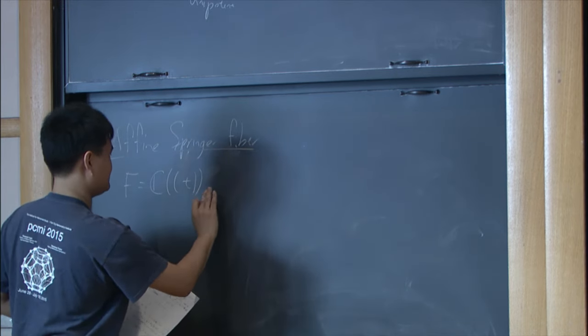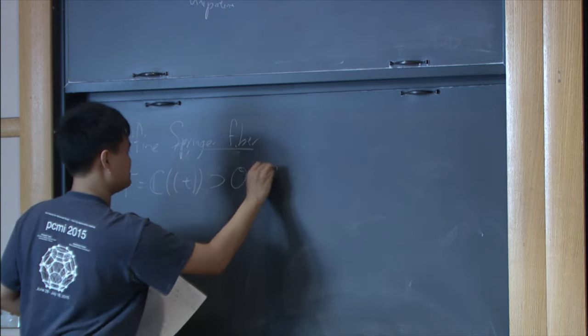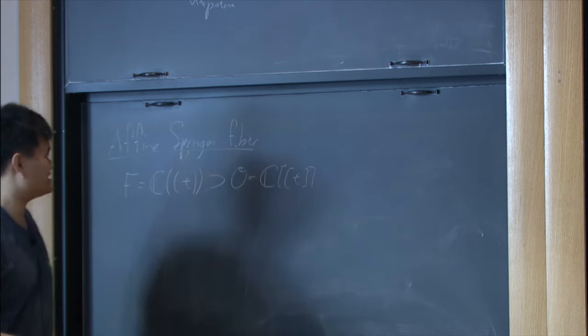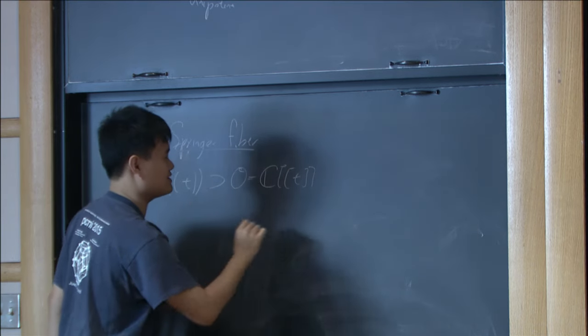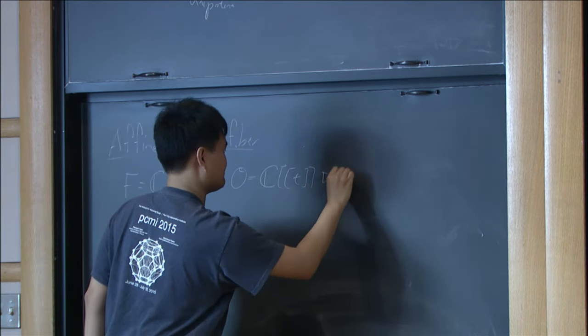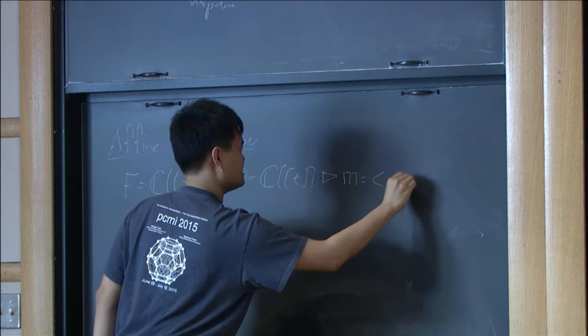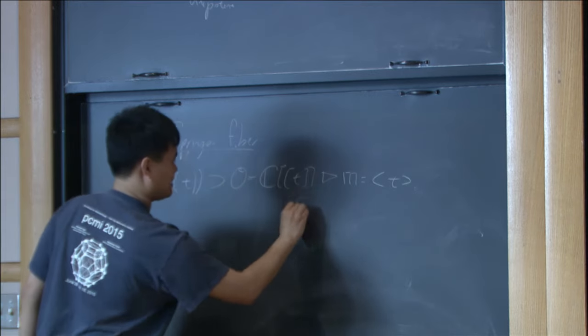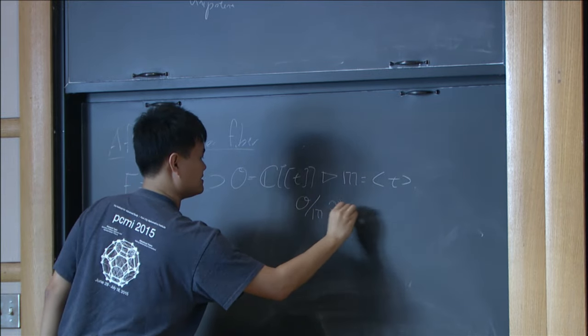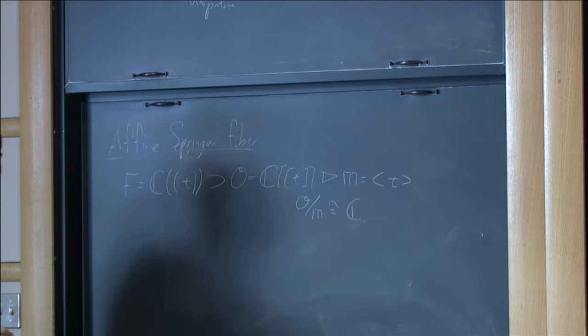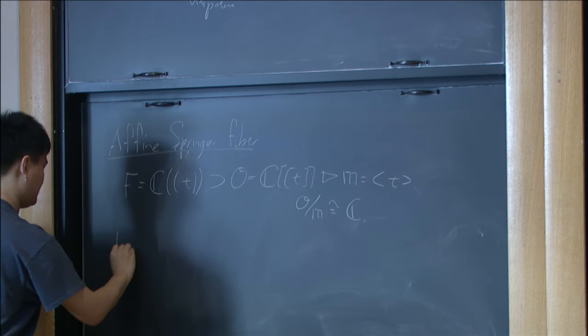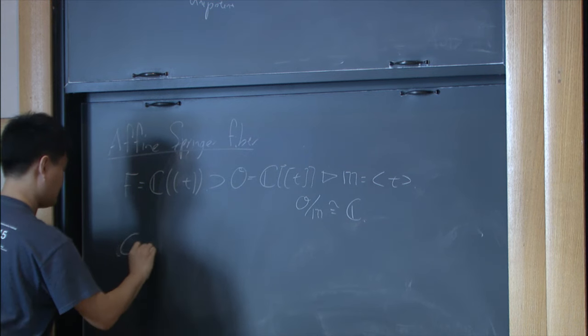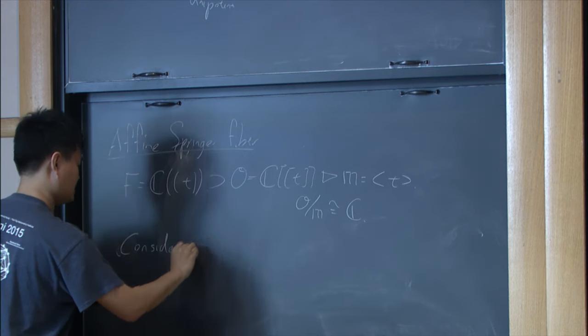So this is like the field of germs of meromorphic functions on a formal punctured disk. And let me take O to be its ring of integers. So those formal series that extend to the origin. And M is the maximal ideal turned by T. So I have O/M is canonically C.